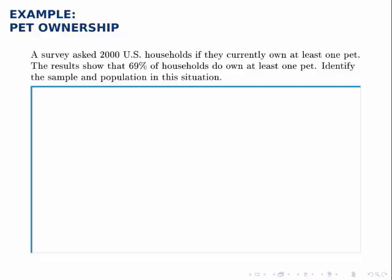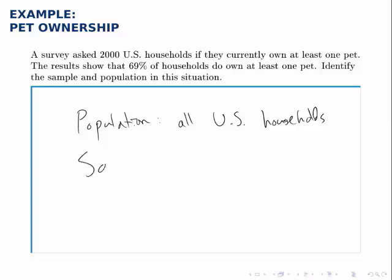With a survey like this, the population is the group that we're interested in knowing something about, but it's usually not feasible to study the entire population, so we gather data from a small subset of that group. In this case, we're interested in knowing about all U.S. households — that's the population. It wasn't explicitly stated, but it's clear from the problem. Because it's infeasible to study all households in the U.S., we take this sample of 2,000 households, gather data from them, and use that to draw inferences about the entire population.